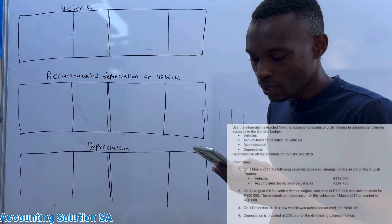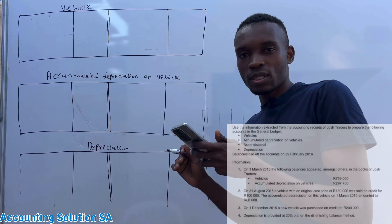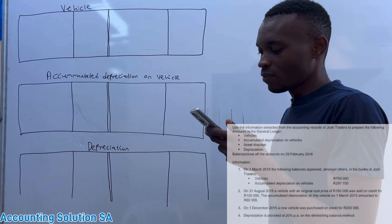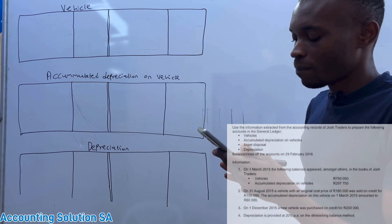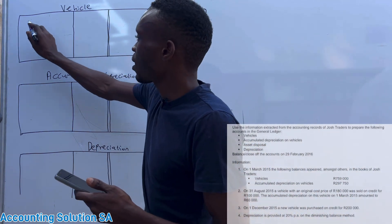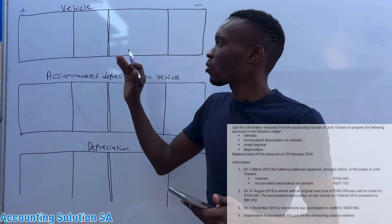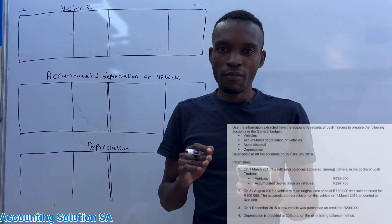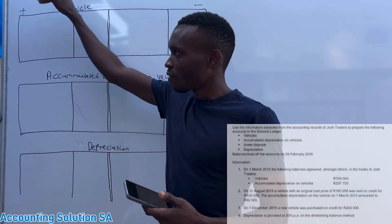Number three: prepare the depreciation account and balance or close off the account on 29 February 2016. Information — on 1 March 2015, these are opening balances, because our year is ending in February 2016, which means 2015 is the start of the reporting period. The following balances appeared in the books of Josh Traders. The first one gives us the opening balance of vehicle. Know that vehicle is an asset — assets increase on the debit and decrease on the credit. Record only the cost of the vehicle on this account.